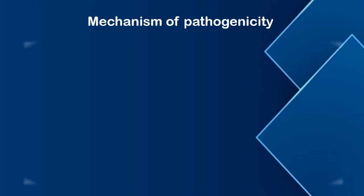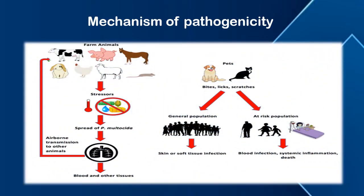Now let's talk about the mechanism of pathogenicity. Here is a figure showing different transmission pathways of Pasteurella multocida. On the left is the evolution of commensal Pasteurella multocida into upper respiratory tract infection in farm animals when they face stress, such as dramatic temperature changes or lack of or improper nutrition. On the right is the transmission of Pasteurella multocida found in oral and nasal cavities of common household pets to humans.